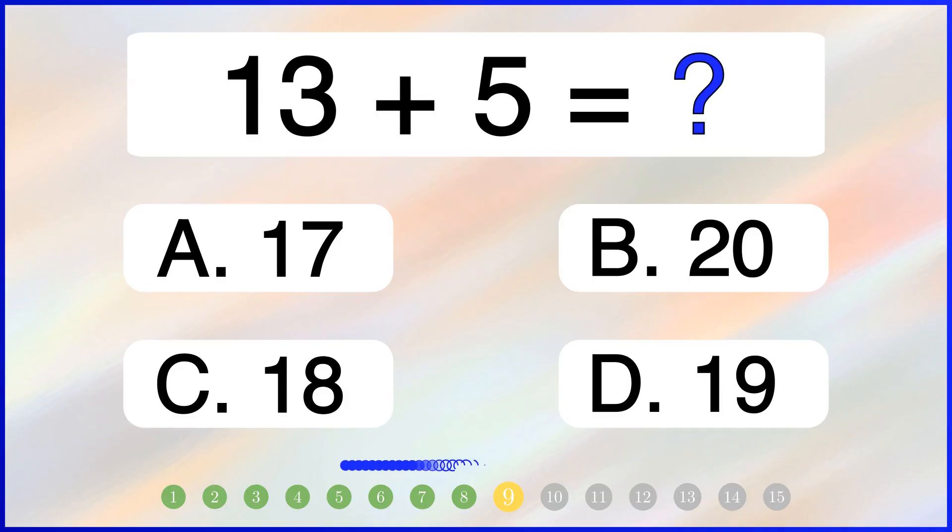What is 13 plus 5? The correct answer is 18.